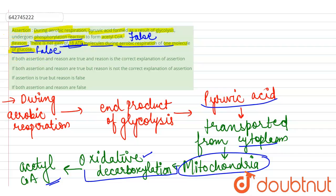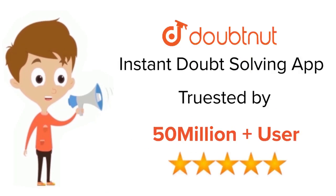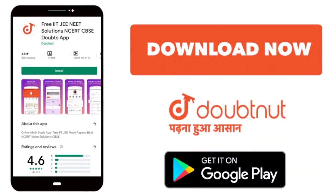Therefore, both the assertion and the reason are false. For class 6 to 12, IIT JEE and NEET level — trusted by more than 5 crore students — download the DoubtNet app today.